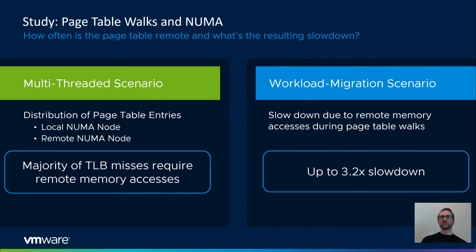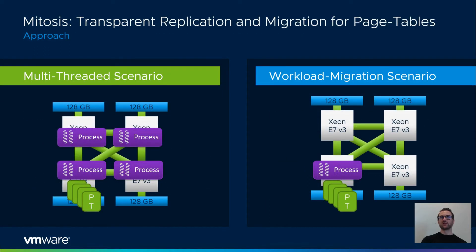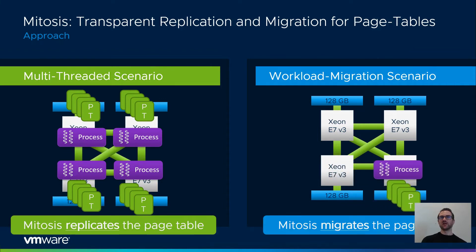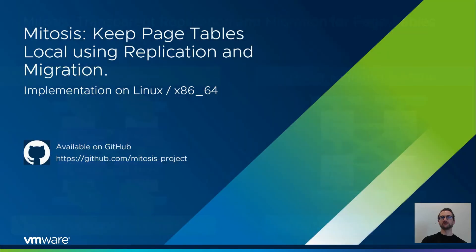In summary, we observed that a majority of TLB misses require remote memory accesses and that there can be a slowdown of up to 3.2x due to remote page table walks. To mitigate those NUMA effects on page table walks, we propose Mitosis. Mitosis replicates the page table for multi-threaded workloads on the NUMA nodes where the workload is running. Additionally, Mitosis migrates the page table in the workload migration scenario along with the workload to the new NUMA node. We implemented Mitosis in the Linux kernel for the x86 architecture. I will briefly highlight some aspects of our implementation and then evaluate Mitosis on real hardware.